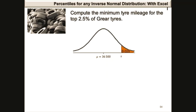Compute the minimum tyre mileage for the top 2.5% of Greer tyres. The area to the right of x is 0.025 since the statement refers to the top 2.5% of the Greer tyres. Using the norm.inv function in Excel, the proportion to the left of x is 1 minus 0.025, which is 0.975. So x equals norm.inv with arguments 0.975, 36,500, and 5,000. The final answer for x is 46,299.81.